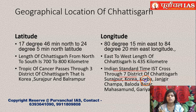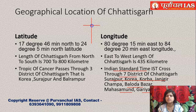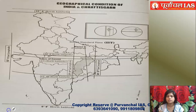The Indian Standard Time (IST) meridian also crosses through seven districts of Chhattisgarh: Surajpur, Korea, Korba, Janjgir-Champa, Baloda Bazar, Mahasamund, and Gariyaband. Please remember that Chhattisgarh is the place in India where the Indian Standard Time meridian and the Tropic of Cancer intersect each other, and this point of intersection is in the Korea district.